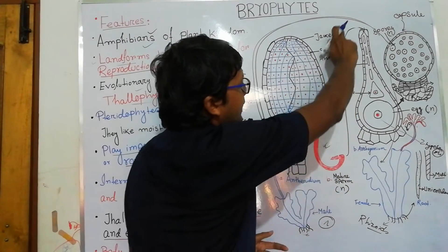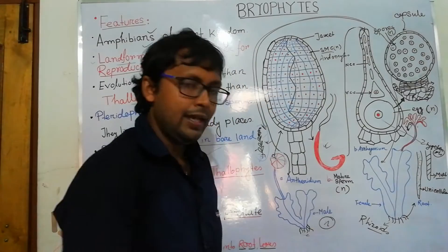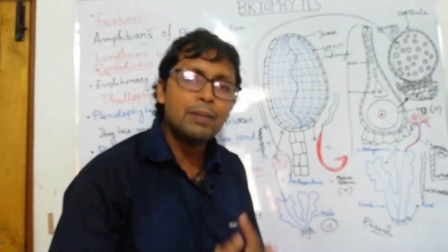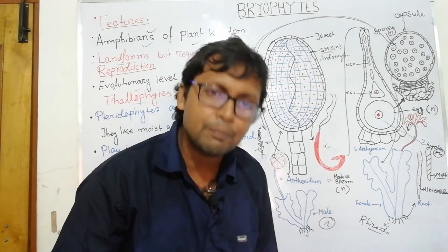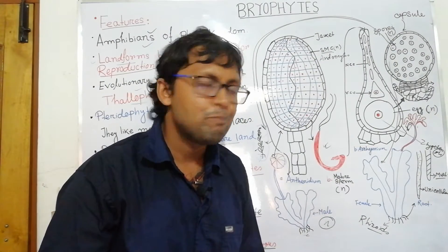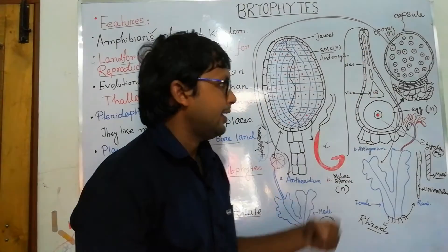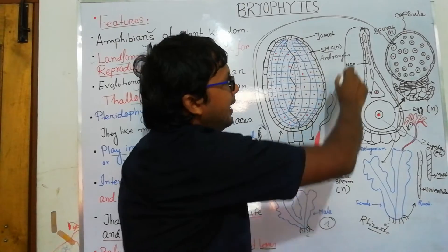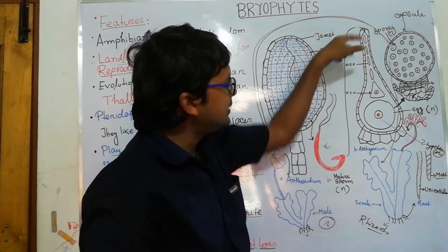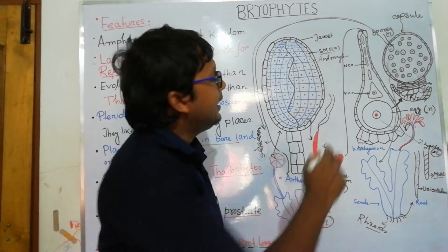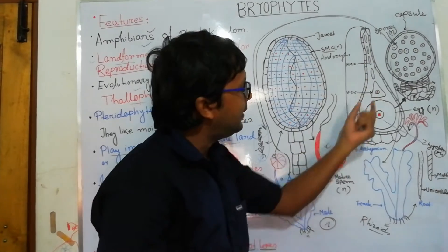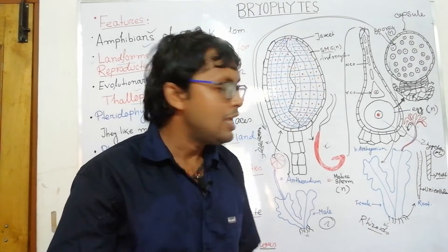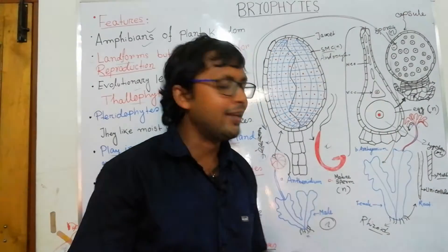The female reproductive organ is the archegonium, which develops on the female plant. The archegonium has three parts: a ventral region, a neck region, and a small pore at the top. Inside the ventral region is a large sphere — the egg — which is non-motile and haploid.